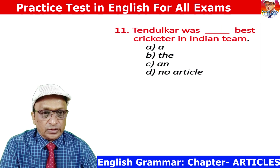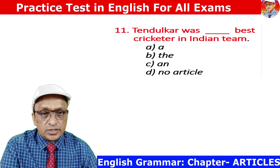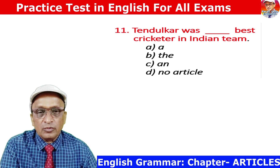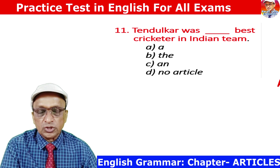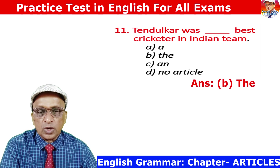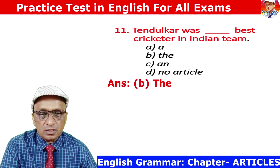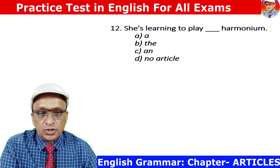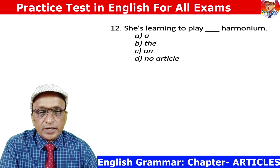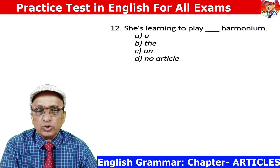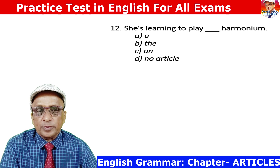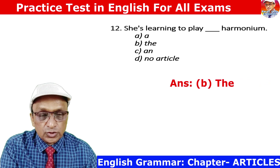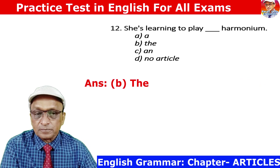Question 11: Tendulkar was the best cricketer. 'Best' is a superlative, and before a superlative expression THE is used. Answer is B. Question 12: She is learning to play the harmonium. Harmonium is a musical instrument, and before musical instruments THE is used. Answer is B.